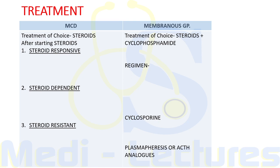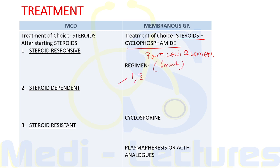For membranous glomerulopathy, the treatment of choice is steroids along with cyclophosphamide. The regimen used is the Ponticelli regimen, given for a total of six months. In the first, third, and fifth months we give steroids, and in the second, fourth, and sixth months we give cyclophosphamide.